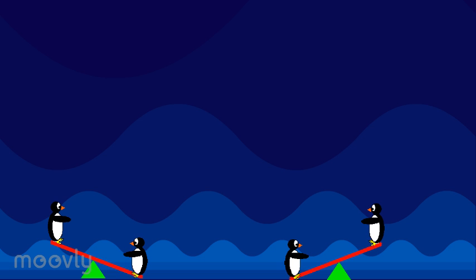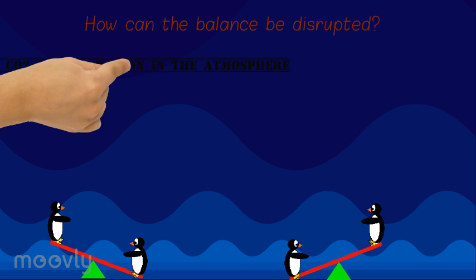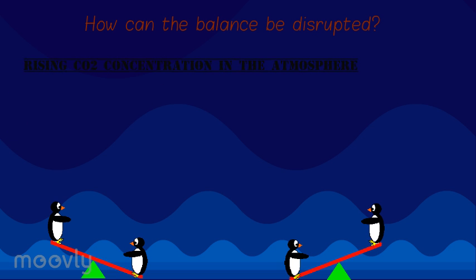What kind of things could disrupt this balance? As the CO2 in the atmosphere becomes more concentrated, it becomes more difficult for the long-wave radiation to escape, and the climate would get warmer.